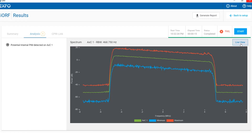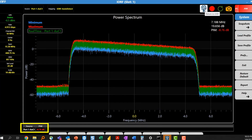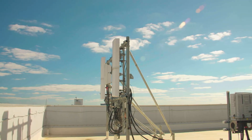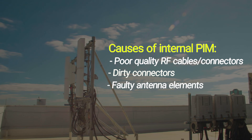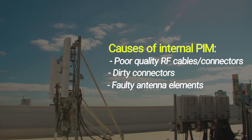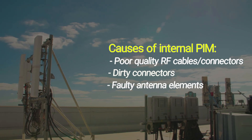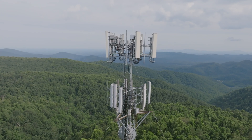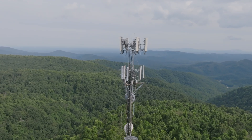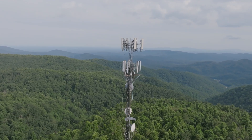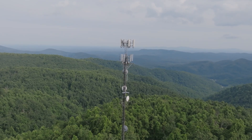Conversely, we can come across internal PIM issues, which usually show on one antenna port. Possible causes of internal PIM include poor quality RF cables or connectors, a bad antenna or port, dirty connectors, or a malfunctioning remote radio head and antenna. When encountering internal PIM issues, the technician will need to check the cables or send a tower crew to investigate and identify the source of the PIM issue before attempting to fix it.